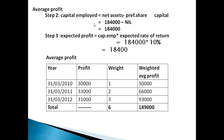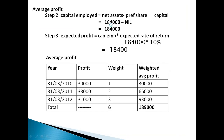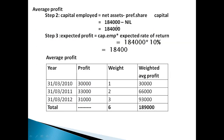The next step: capital employed is equal to net assets minus preference share capital. Net assets from the first step is 1,84,000. Since there is no preference share capital listed in the liabilities, the same amount is carried forward. Capital employed is 1,84,000.